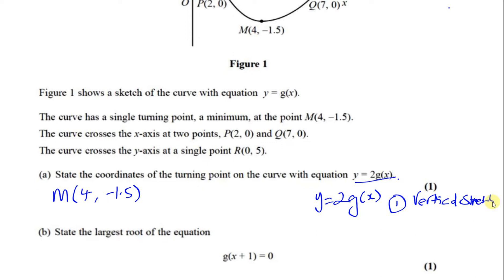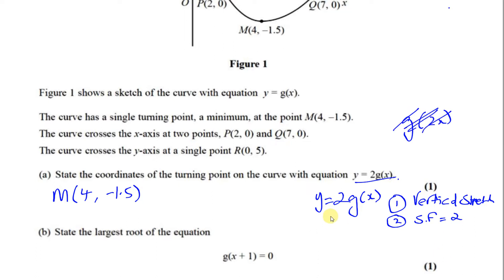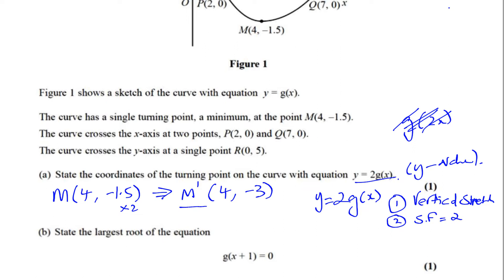You can think of it this way: when the number is outside the function, everything acts normally — the stretch factor is 2. If it were inside the function, G of 2X, it would be a horizontal stretch and you'd multiply the X coordinate by the reciprocal. But here the 2 is outside, so you multiply the Y values by 2. The X coordinate stays the same; the Y coordinate becomes -1.5 times 2, which is -3. So the coordinates of the turning point after the transformation are (4, -3).